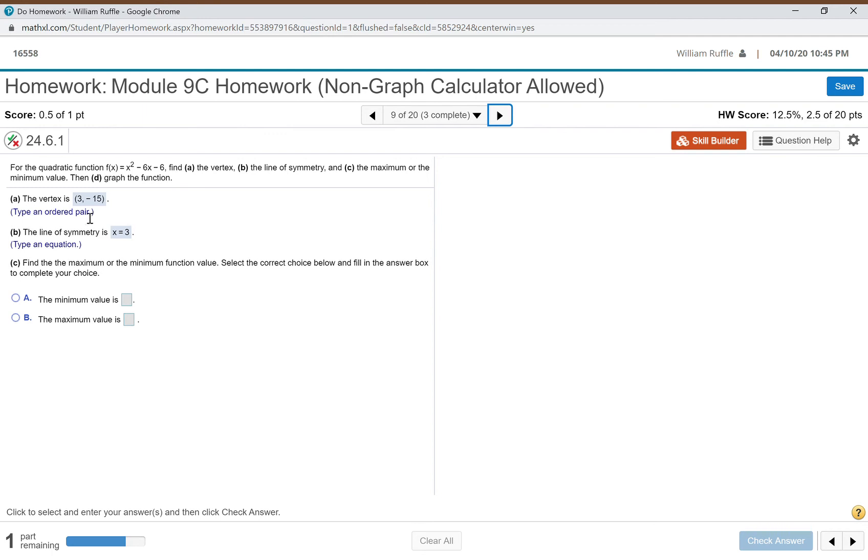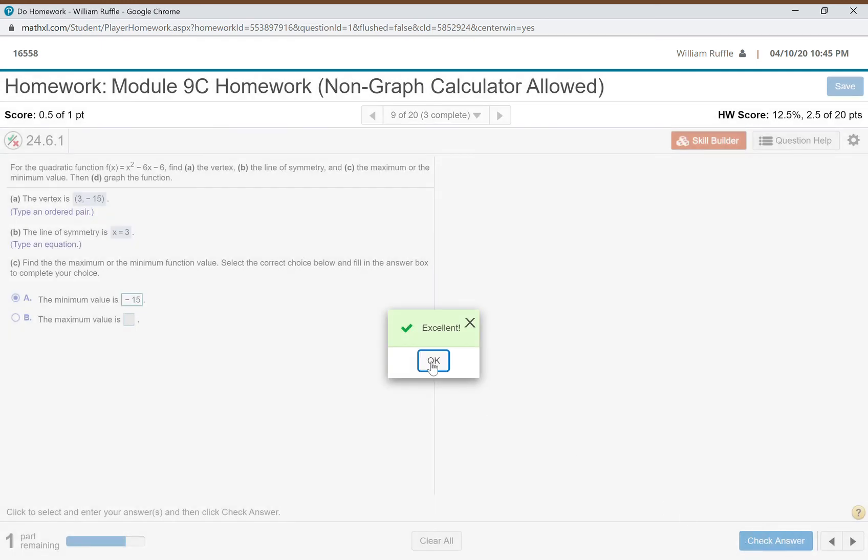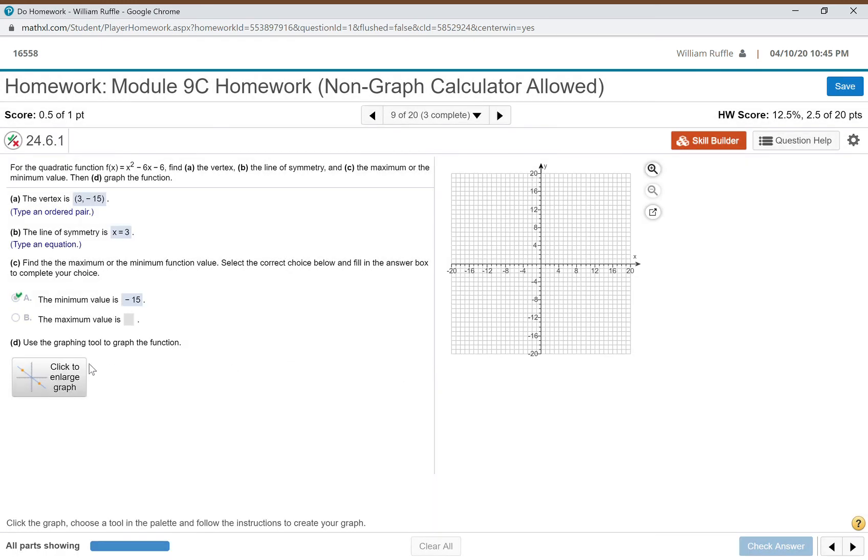I found x equals 3. I plugged it into the equation and got negative 15. Line of symmetry is always the x value. Now this is a positive x squared, so this is a minimum value. My y value in this case is negative 15, so I just check my answer. Now I've got to graph this.